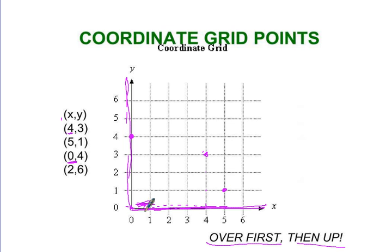It's 2, 6. Over 2, up 6. There's our last point. Over first, then up.